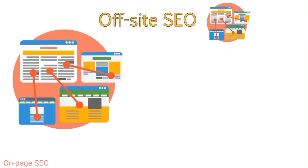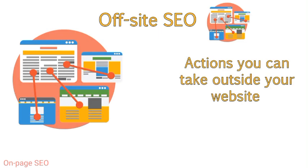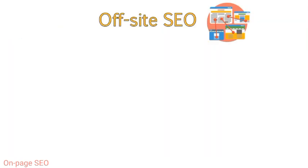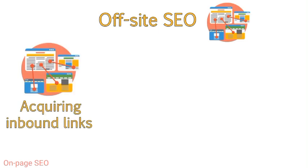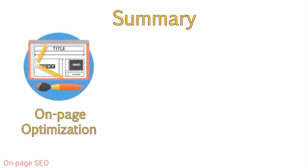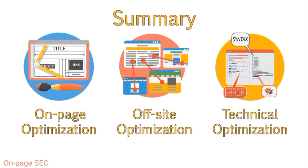Off-site SEO or off-page SEO refers to what actions you can take outside of your website to improve optimization of your website. This is where SEO gets very similar to public relations because it can be very focused on developing good relationships with other webmasters. Off-site SEO has historically referred to acquiring links from other websites pointing to your website, but this area is quickly growing to encompass social media and other off-site elements as well. You should now have an understanding of the three major focus areas: on-page, off-page, and technical, and be able to define each and how each works to create a better optimized website.